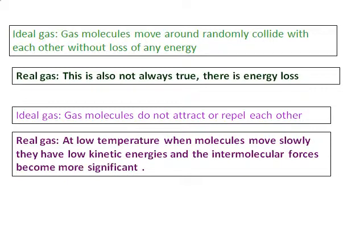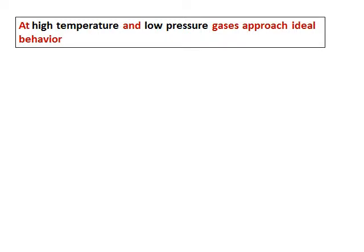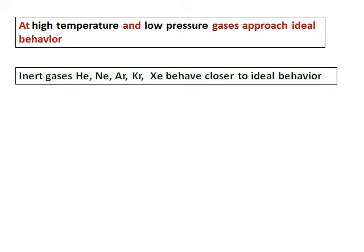From whatever we have seen so far, whatever we have assumed for an ideal gas, in real situation, most of the time ideal gases do not behave ideally. There is deviation from ideal behavior. So does it mean that we never can have ideal behavior? No.